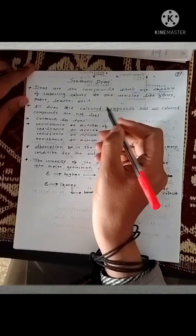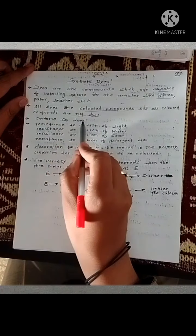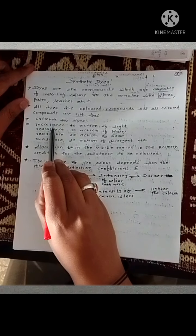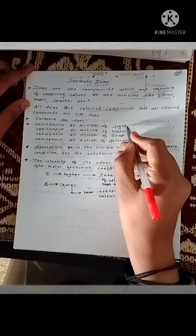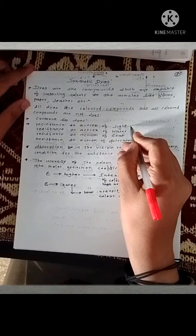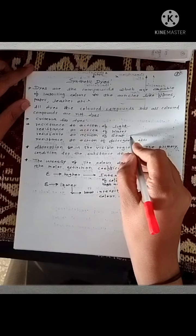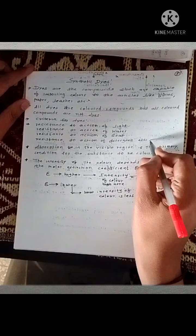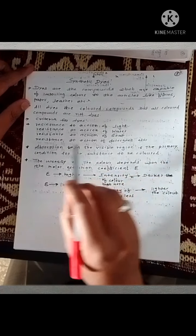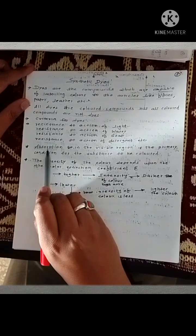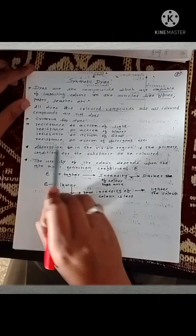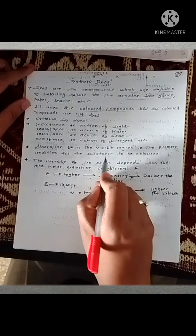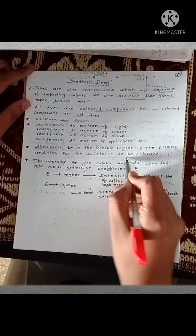There are certain criteria a compound has to follow to become a dye. Dyes should show resistance to the action of water, light, soap, and detergents. Absorption in the visible region is the primary condition for a substance to be colored.